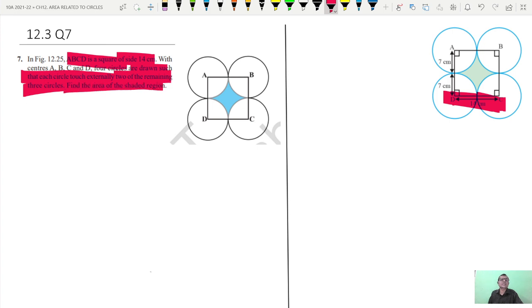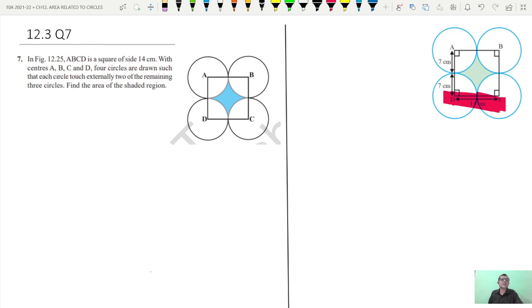Find the area of the shaded region. That means from the picture, this is the given figure, so you have to find the area of the shaded region, this shaded region you have to find. Now, how to find?